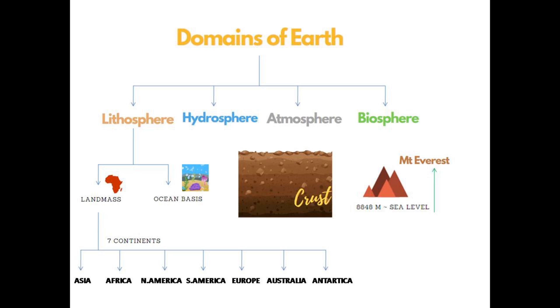The solid and rigid land portion of Earth is said as landmass. All the continents and the islands we have on Earth are said as landmass. Earth has seven continents.